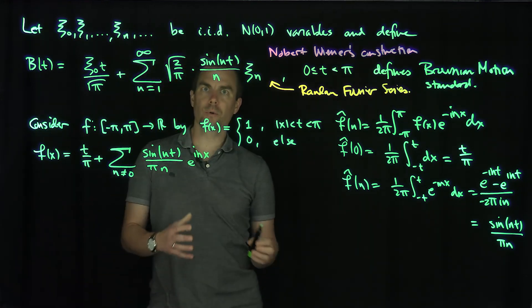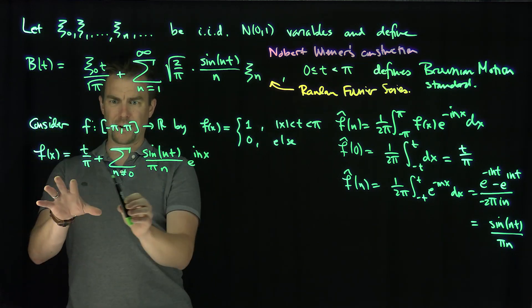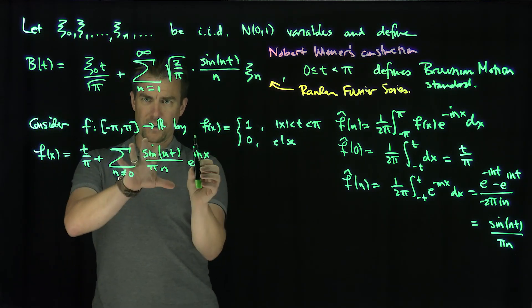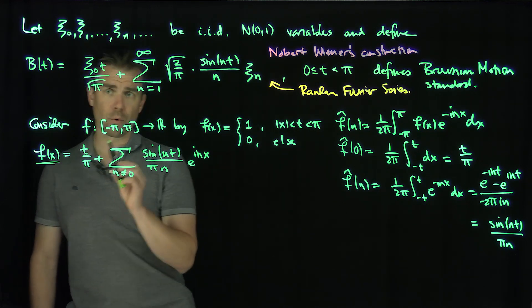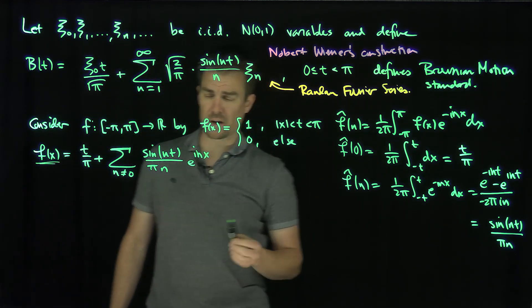So in other words, it looks like the function we have over here in Brownian motion are very similar to each other. So this function, f(x) is going to play an important role in proving the properties of Brownian motion.